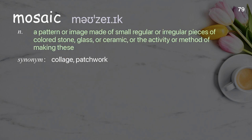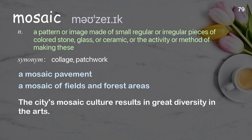Mosaic: A pattern or image made of small regular or irregular pieces of colored stone, glass, or ceramic, or the activity or method of making these. Examples: A mosaic pavement. A mosaic of fields and forest areas. The city's mosaic culture results in great diversity in the arts.